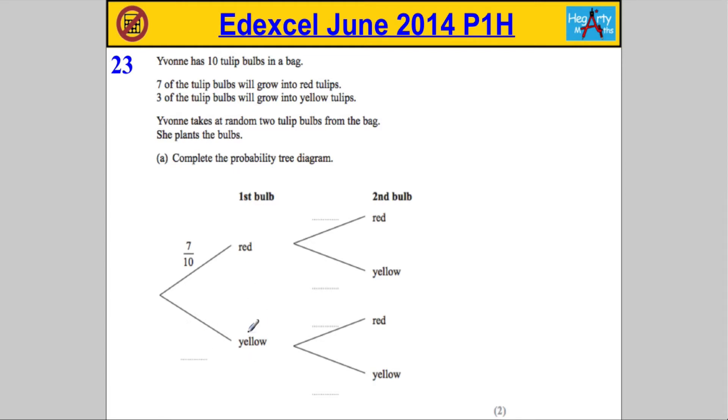Okay, fair enough. They've done a bit of the work here for us by giving us the diagram, but let's have a look. If 7 of the tulips are red and 3 are yellow, well, the probability that the first tulip is yellow surely must be 3 out of 10. Remembering that the sum total of the branches here must add to 1.